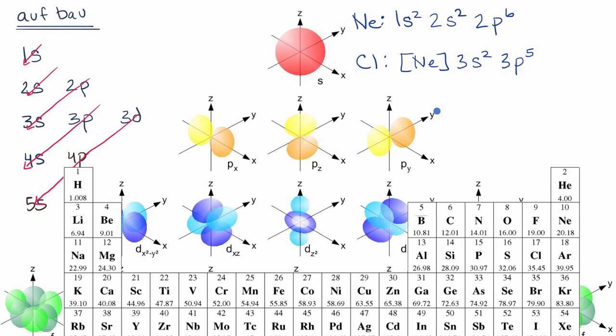And what would argon be? Well, argon has one more electron than chlorine, so it'll just fill out that 3p subshell. So it would be building on top of neon, and then we get to 3s² 3p⁶.